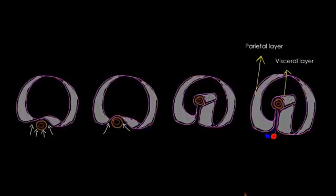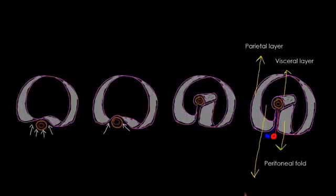The part of the peritoneum which suspends or holds the organ is called the peritoneal fold. This peritoneal fold transmits the blood vessels and nerves to supply the covered organ. The cavity present intervening between the parietal and the visceral layer is called the peritoneal cavity.